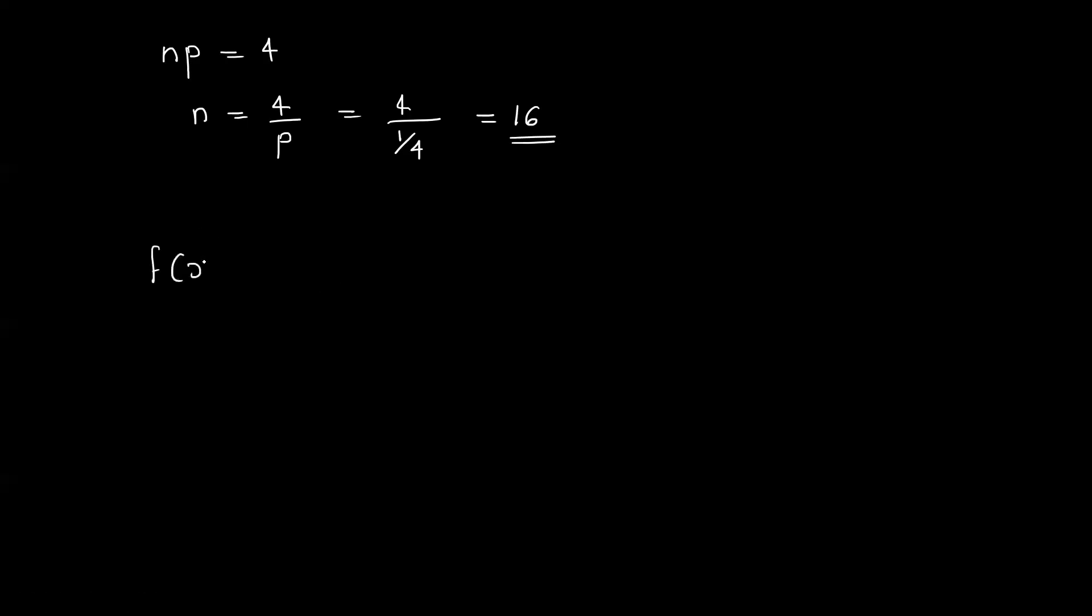In the binomial distribution, f of x equal to 16Cx, 1 by 4 raised to x, 3 by 4 raised to 16 minus x, for x equal to 0, 1, 2, etc., 16, otherwise 0.